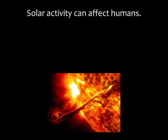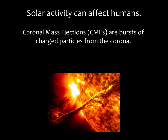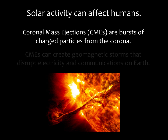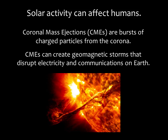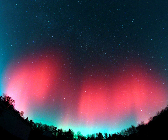Solar activity can affect us humans on Earth. For example, solar flares can sometimes launch a billion tons of superheated gas into space. These particles travel outward from the sun in a huge bubble called a coronal mass ejection. Coronal mass ejections can create geomagnetic storms that disrupt electricity and communications on Earth. Geomagnetic storms are also responsible for the beautiful aurorae — when the charged particles ejected from the sun strike atoms and molecules in the Earth's atmosphere, they excite those atoms, causing them to light up.